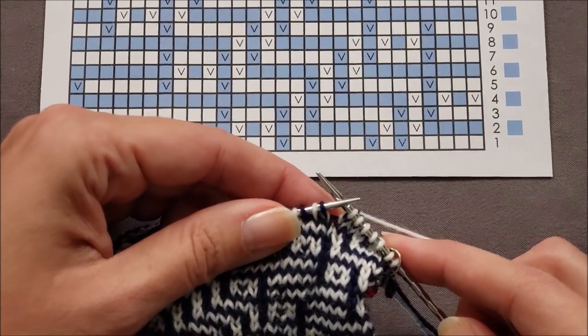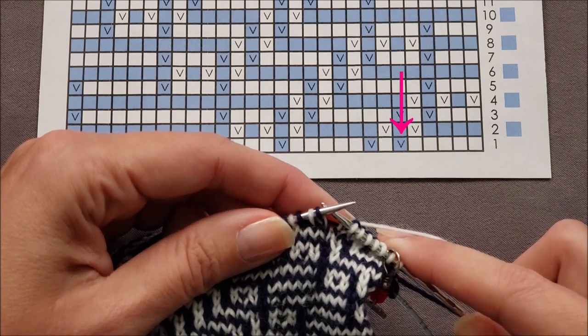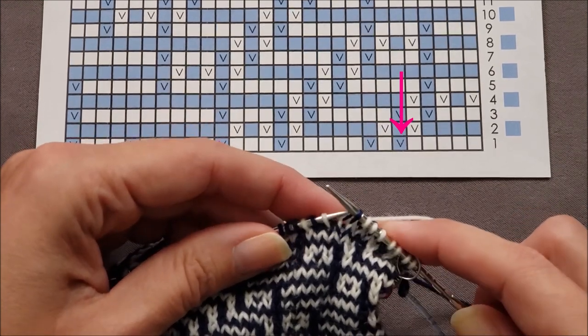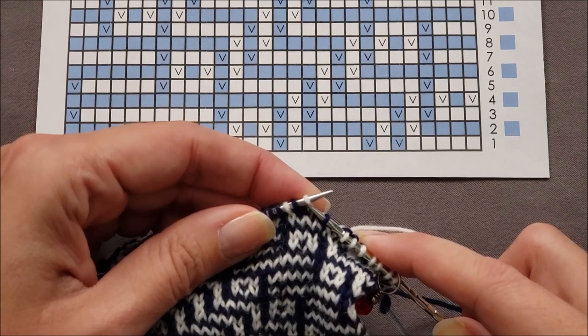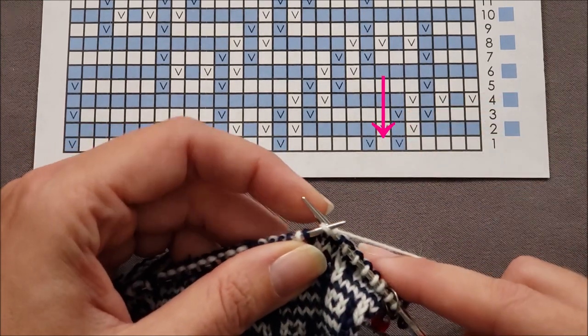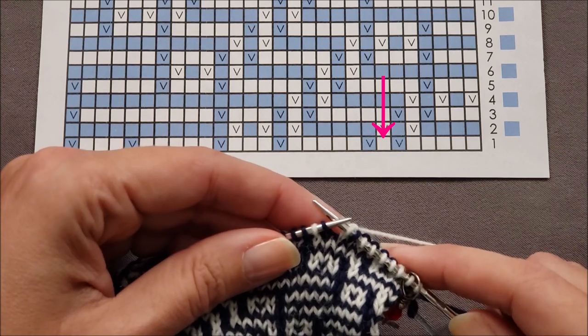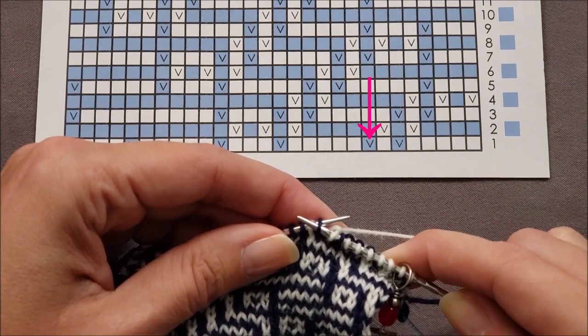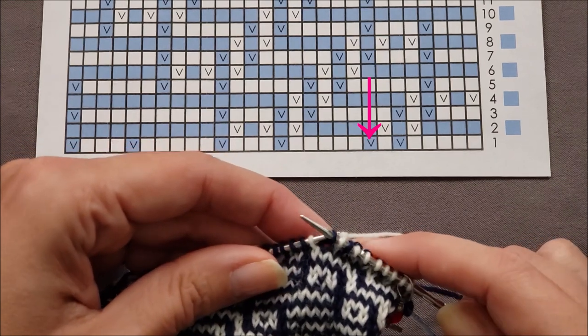And then I know that I'm slipping a stitch and that stitch is a blue stitch that I'm slipping, and then slip a stitch. And again, I know that it's a blue stitch that I am slipping.